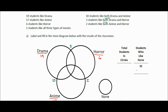The next step was to write down the category including all three movies in the middle of our Venn diagram, where all three circles overlap. We've got one student that likes all three types of movies, so I'm going to put that one person in there.